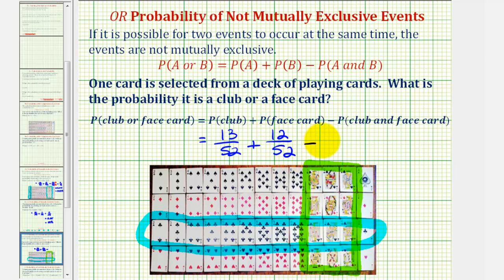But now we have to subtract the probability that the card would be a club and a face card. The reason we have to do this is that notice that the cards that are both clubs and face cards, or these three cards here, were included in the favorable number of ways for both the clubs and the face cards. So these three cards were counted twice, and therefore we have to subtract this probability here, which would be 3 out of 52.